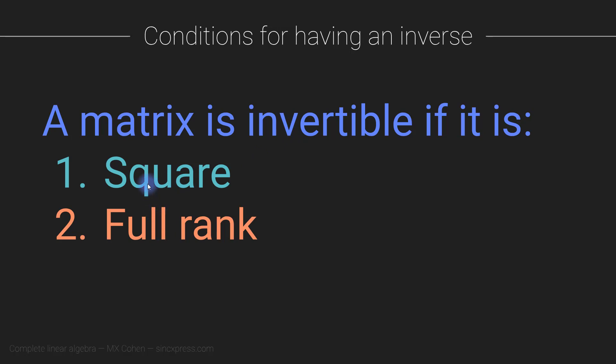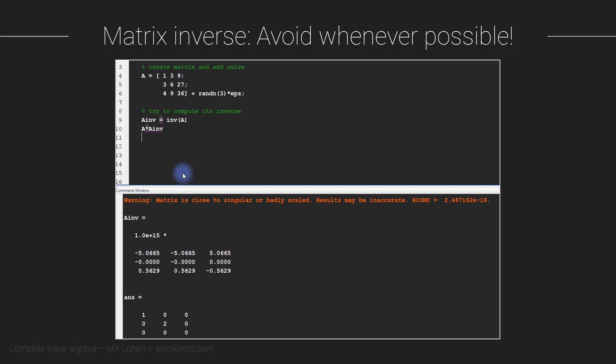Some rectangular matrices also have an inverse — called one-sided inverses — and I will discuss those later in this section. It is useful to know whether a matrix even has an inverse before trying to compute it, because computing the inverse is time-consuming, difficult, and can produce numerical instabilities and errors.